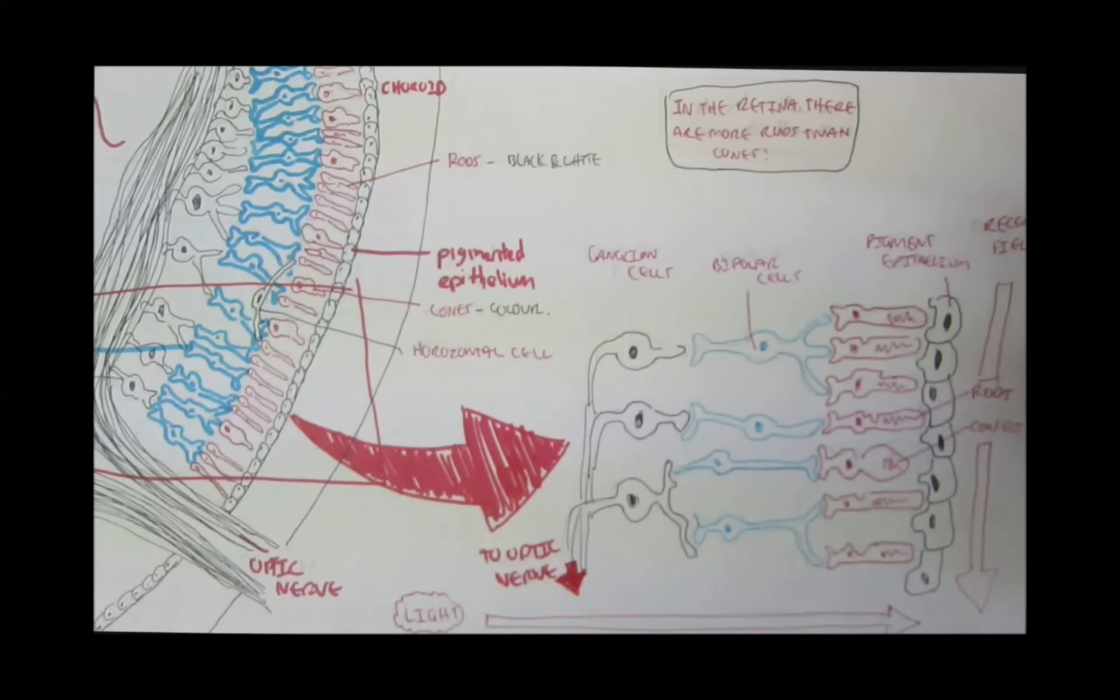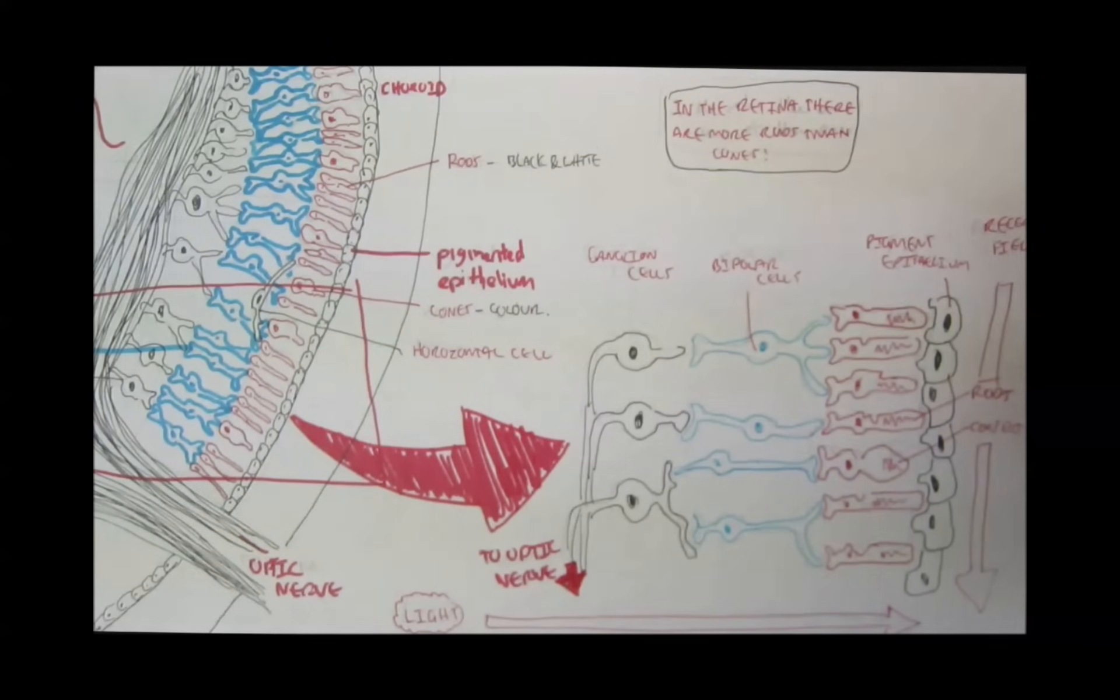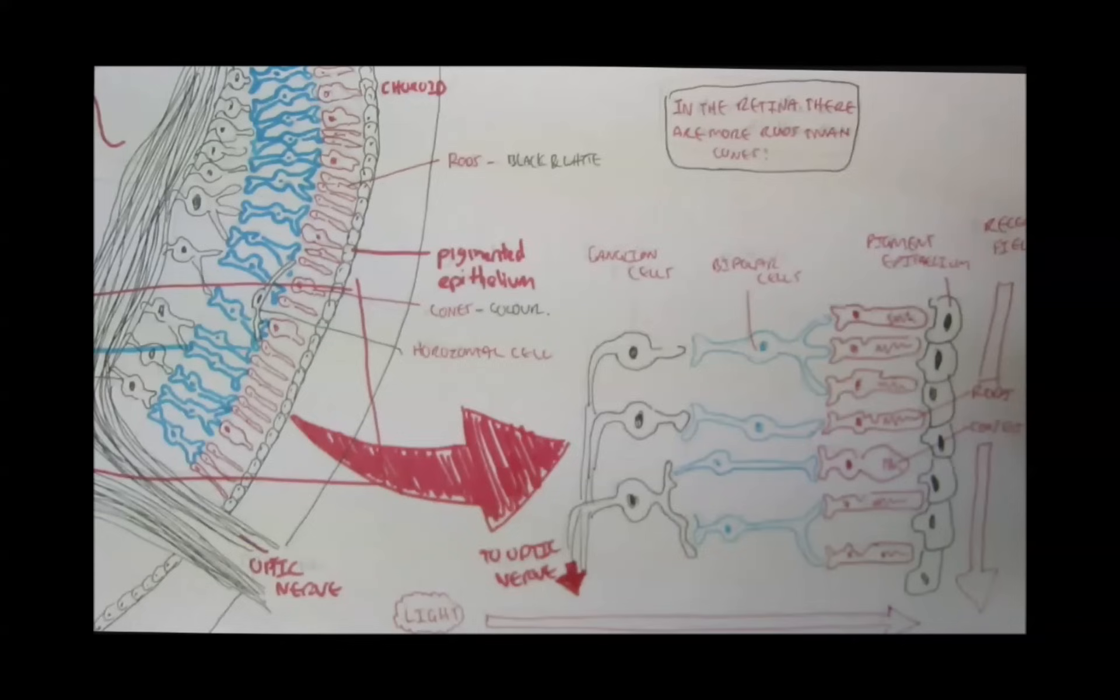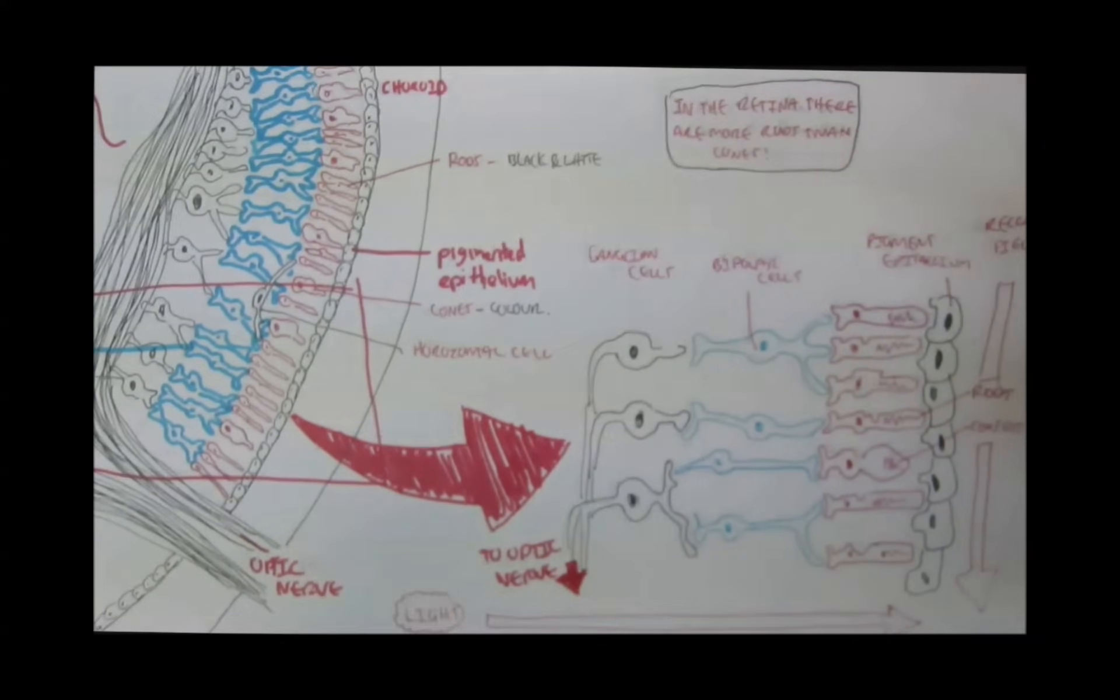Then, they will send these signals to the bipolar, then the ganglion, then to the brain, basically to form an image. Now, that was just an introduction of vision physiology. I hope you understood that. Any questions, just ask, I guess.